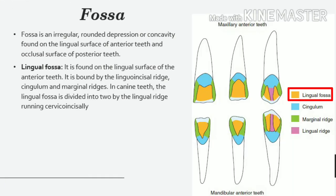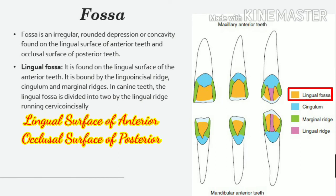Fossa. A fossa is an irregular, rounded depression or concavity found on the lingual surface of anterior teeth and the occlusal surface of posterior teeth. The point of convergence of ridges and the junction of grooves form the depression or fossa in posterior teeth. Lingual fossa: it is found on the lingual surface of the anterior teeth, bound by the lingoincisal ridge, cingulum, and marginal ridges. In canine teeth, the lingual fossa is divided into two by the lingual ridge running cervico-incisally.